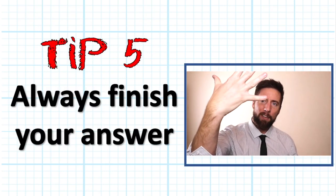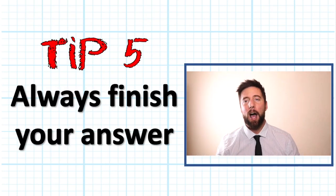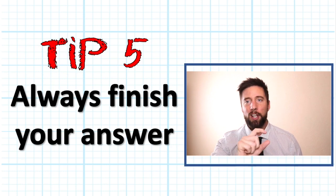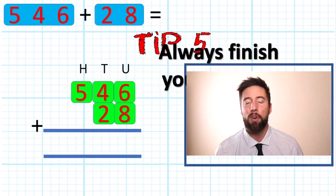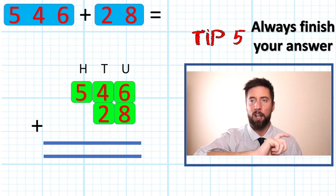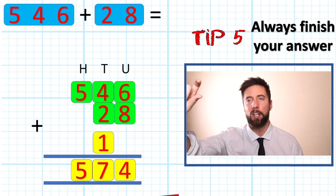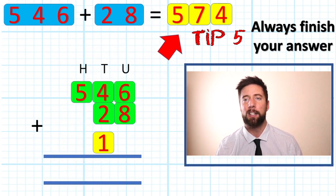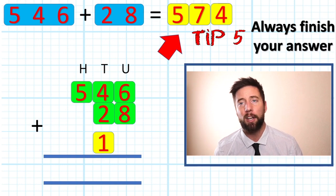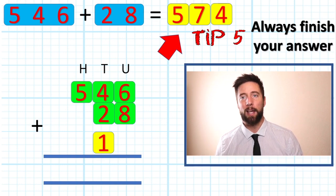Tip number five, last tip, we must always finish our question. You don't just leave your answer here in the answer row. Put your answer back up with the question to complete your number sentence. Bing bang bosh, you've now done your perfect column addition.